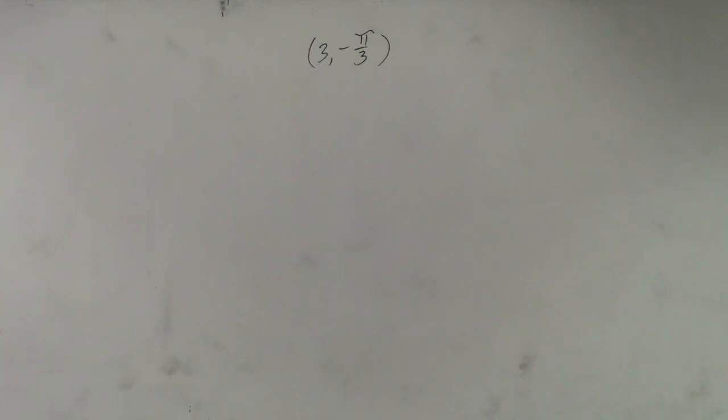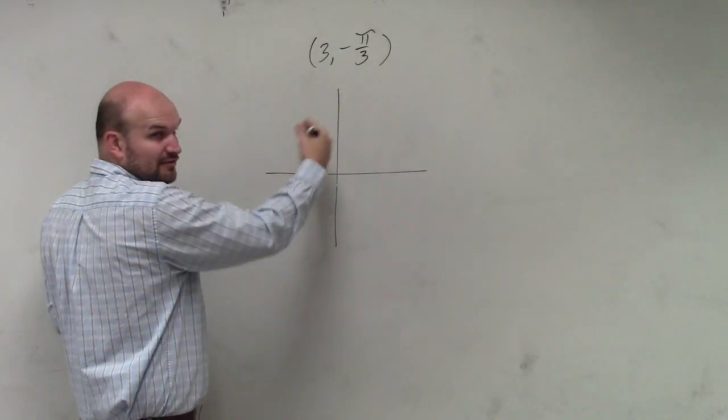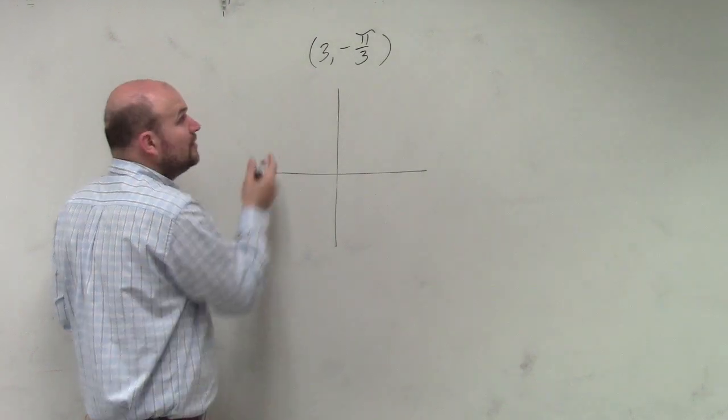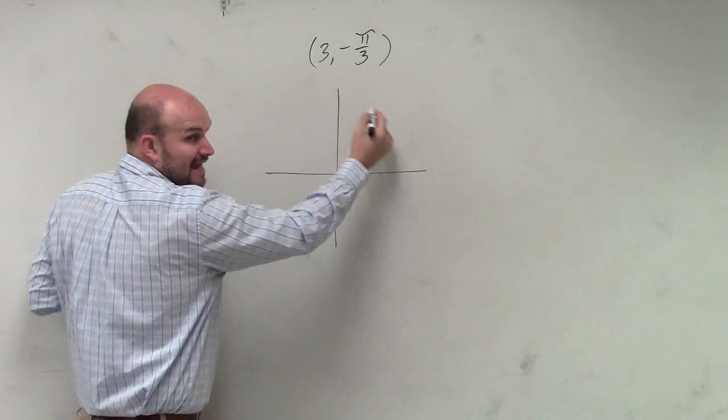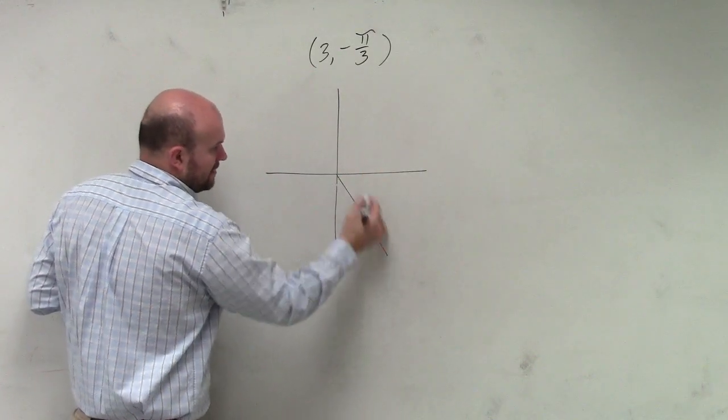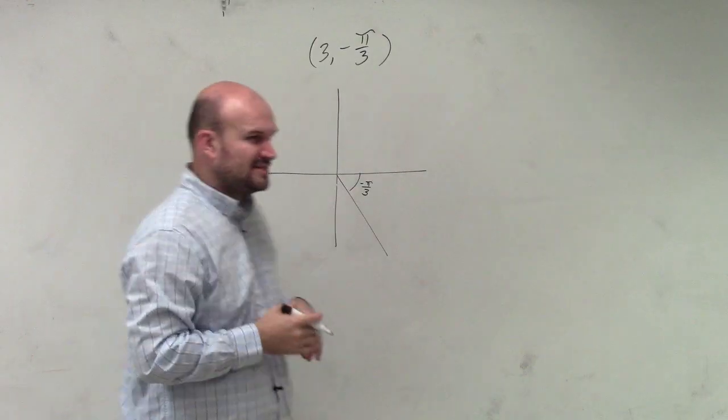So what they're giving us in this case is if we're going to graph this, because I might say to graph something, we know that this is kind of like a distance of 3 from the center, right? And then the angle is negative π/3, which is going to be in the negative direction down here. We could say like negative π/3 is down there, right?